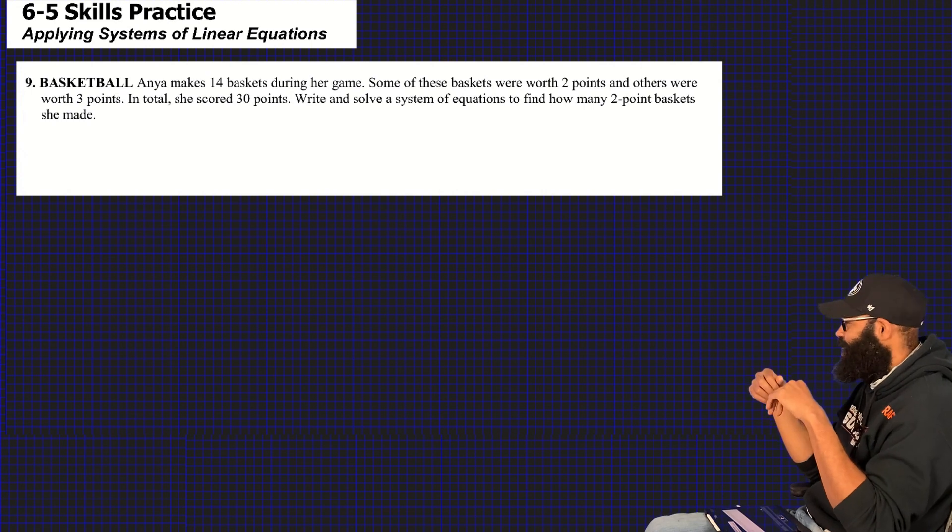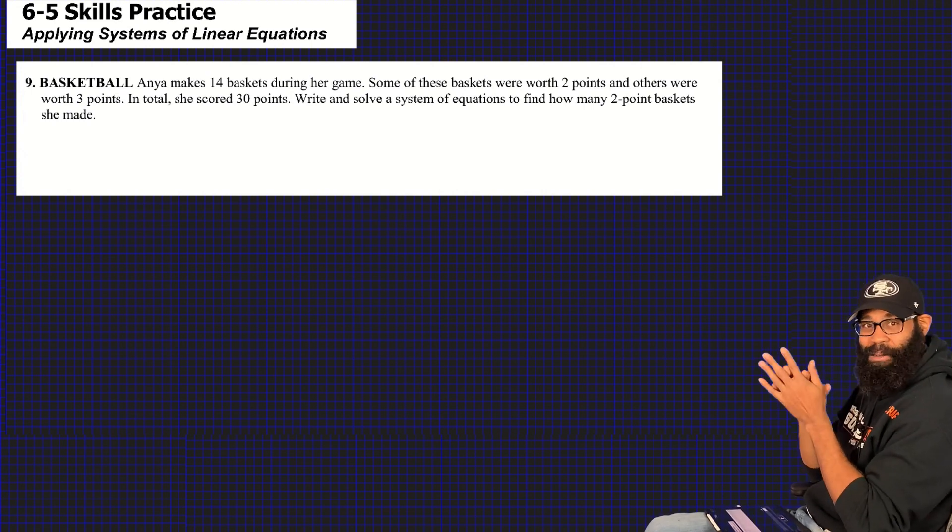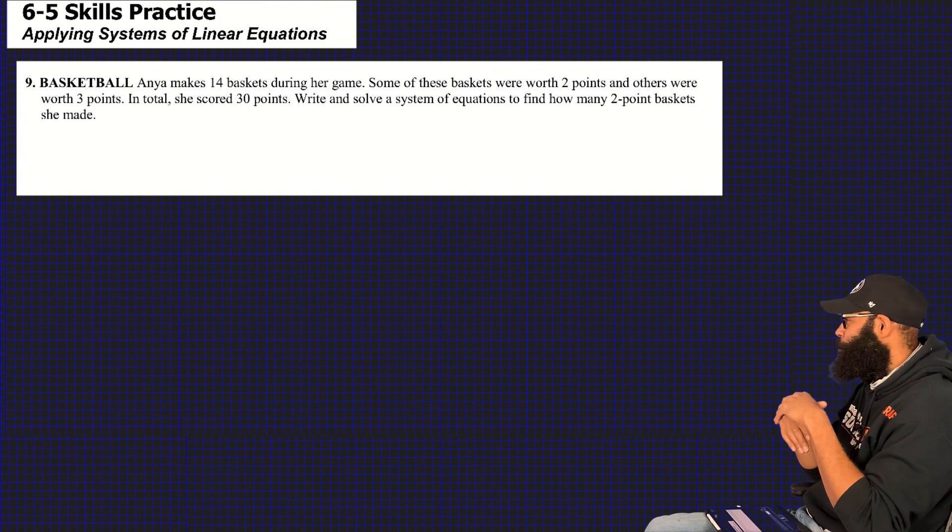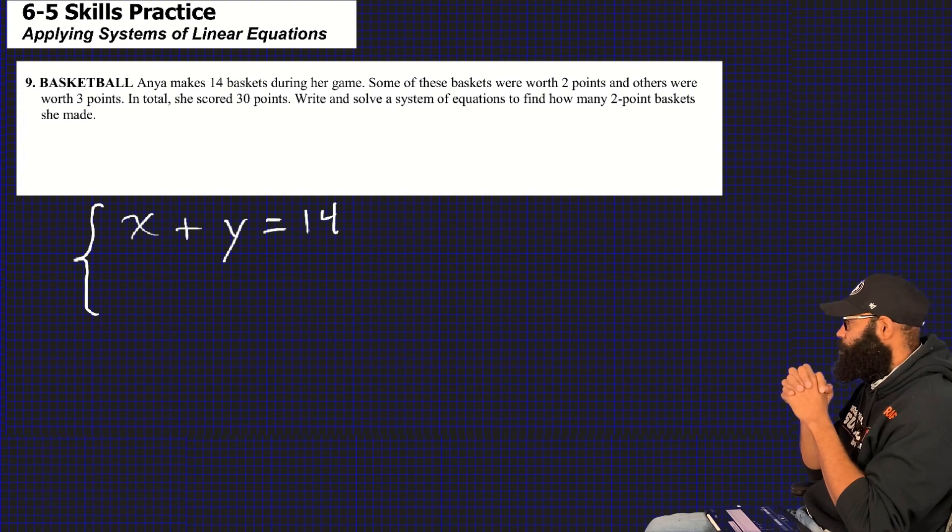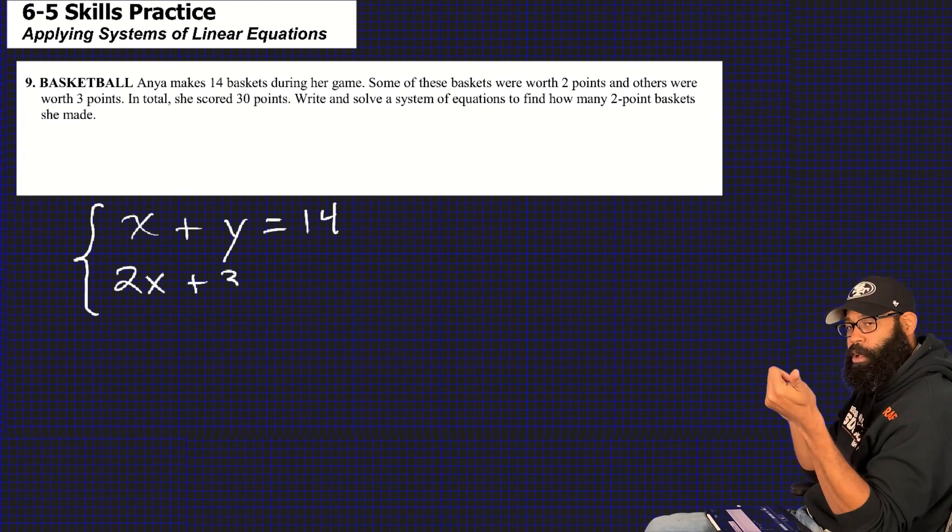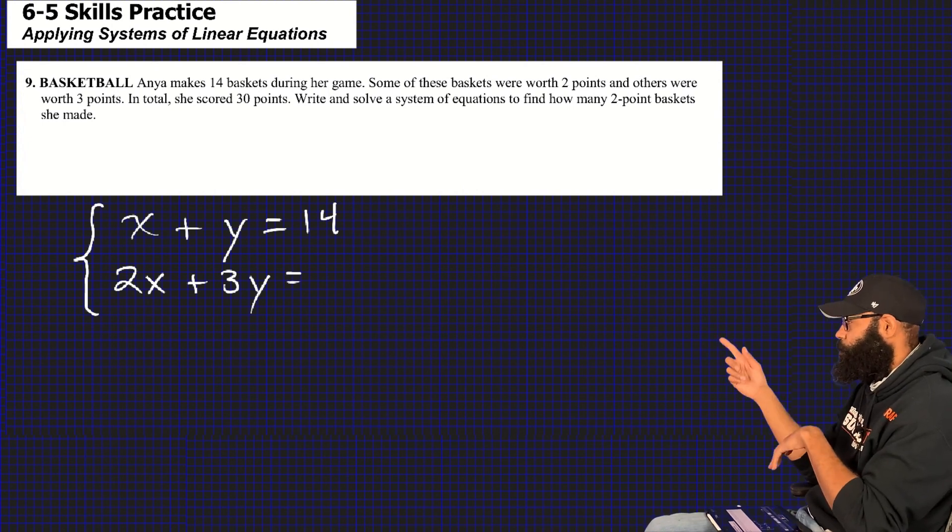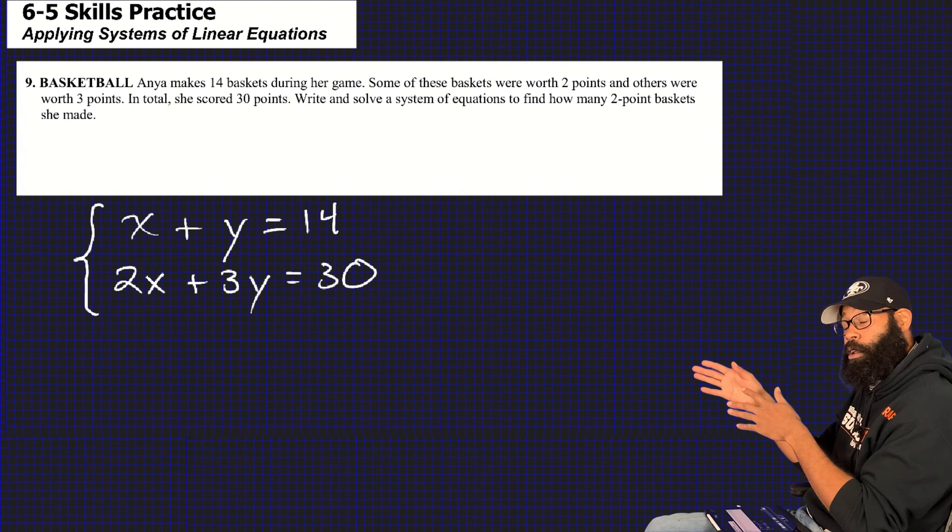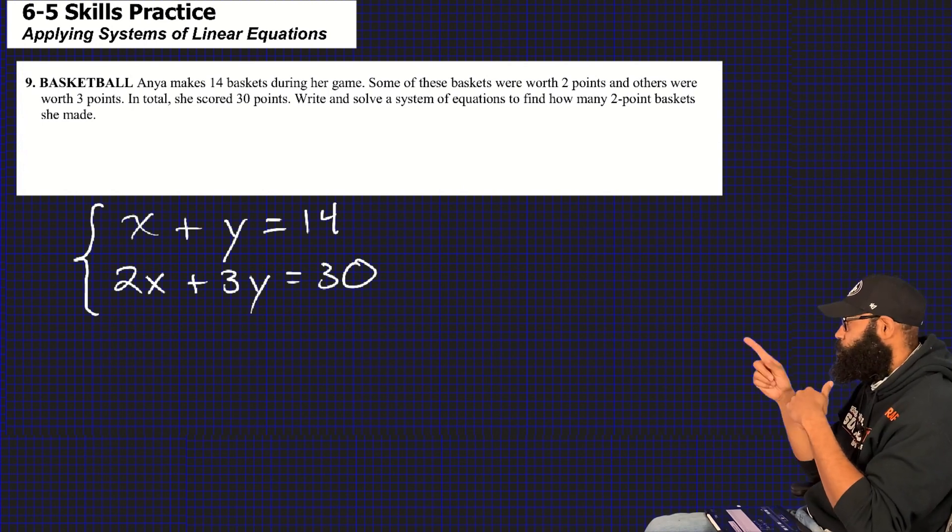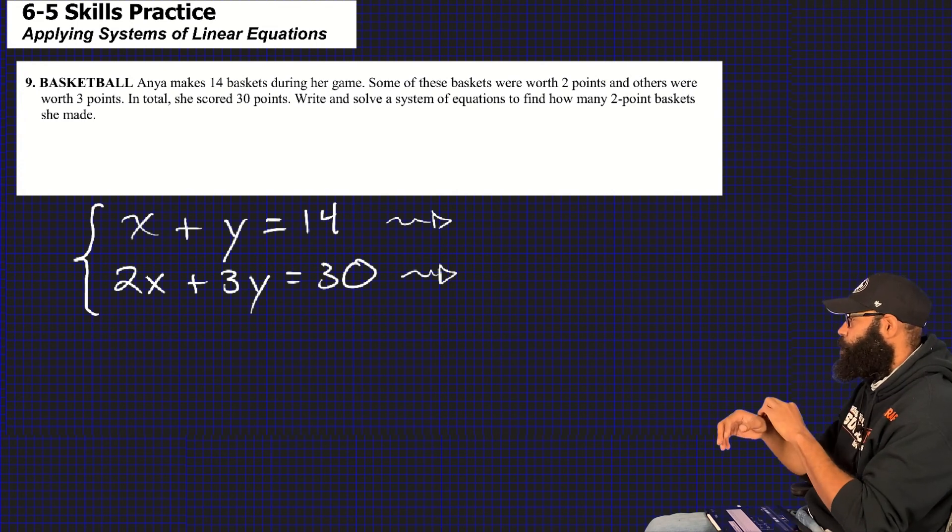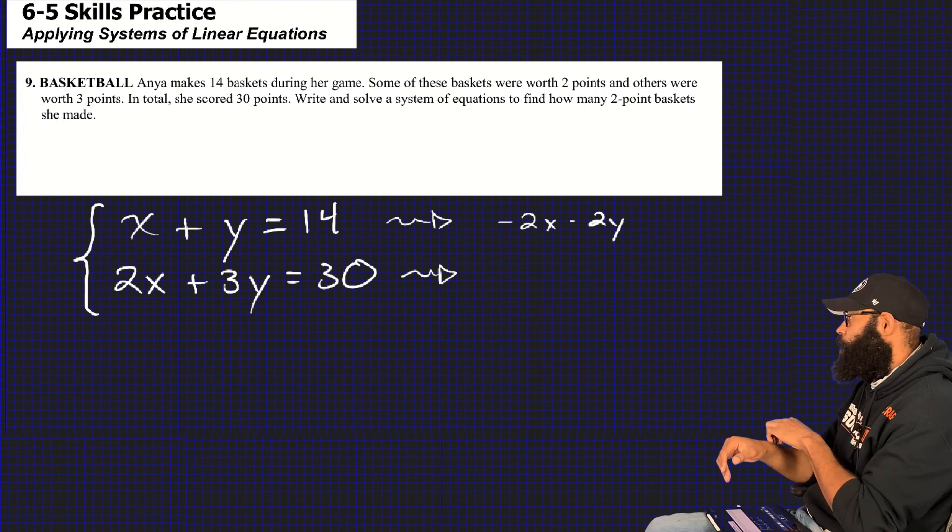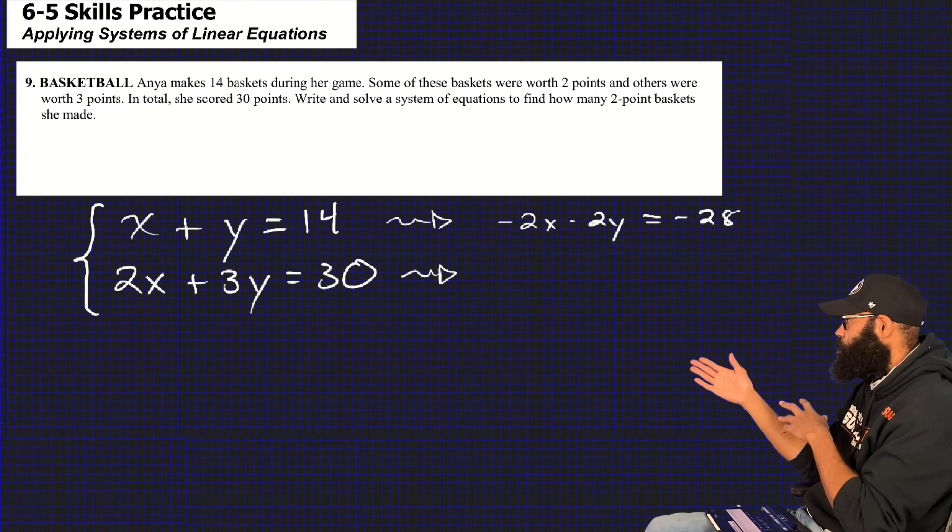Here we go, guys. Basketball. Anaya makes 14 baskets during her game. Sounds like a total to me. Some of these baskets were worth two points and others were worth three points. Makes sense. If you made 14 baskets, it would either be a two-pointer or a three-pointer. So x represents two points, y represents a three-pointer. That's why 2 times x plus 3 times y is equal to the total amount of points that she had. She had 30 points, pretty good game. But I don't see it say y equals, I don't see it say x equals. So what am I doing, guys? I'm using elimination.